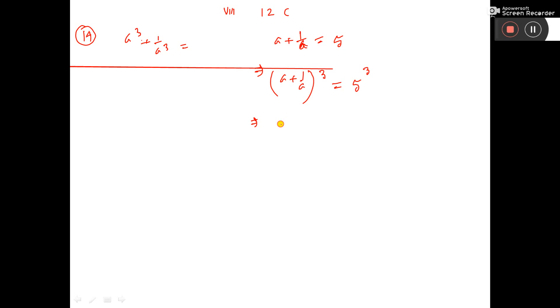Now, using the a plus b cube formula: a cube plus b cube plus 3ab into a plus b, and this side 5 into 5 into 5, that is 125.